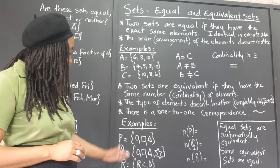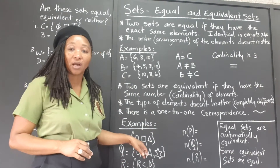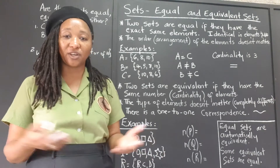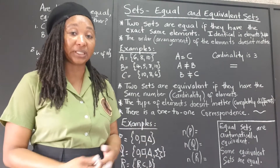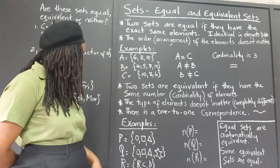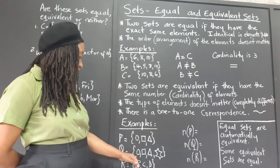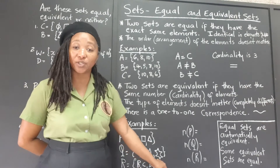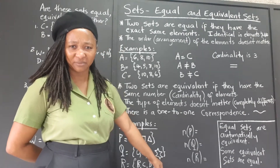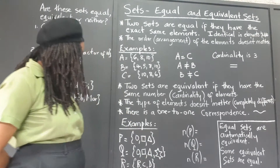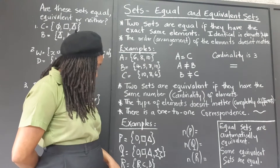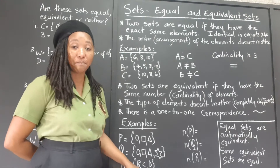So let's look at these sets. Set T has a circle, a square, and a triangle — remember, sets can have a set of anything: shapes, numbers, cards, whatever. Set Q has a circle, a square, a triangle, and this strange-looking star shape, giving it four elements. And set R has some letters: B, C, and D.